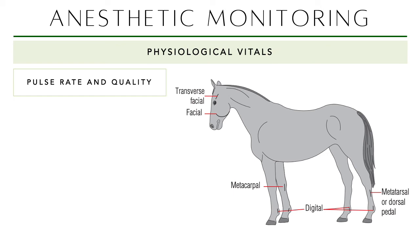Anesthetic monitoring for large animals under GA depends on the institution and resources available. The basics are the same: heart rate, respiratory rate, temperature. We'll discuss the specific idiosyncrasies for large animals.